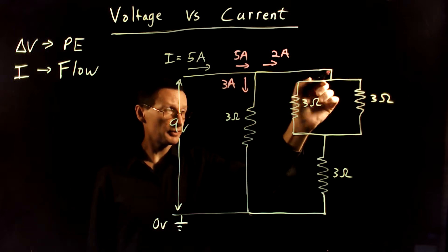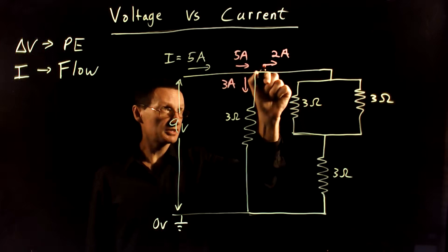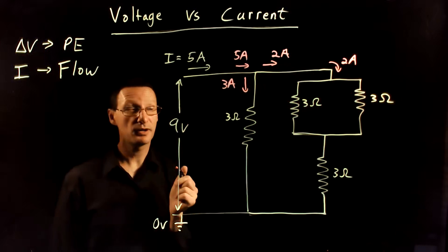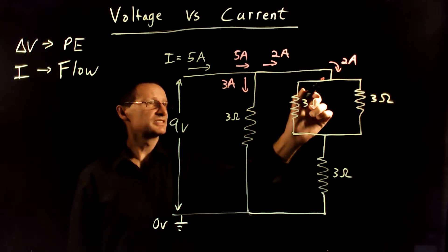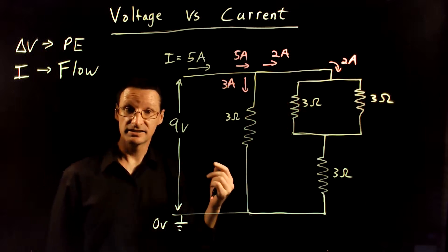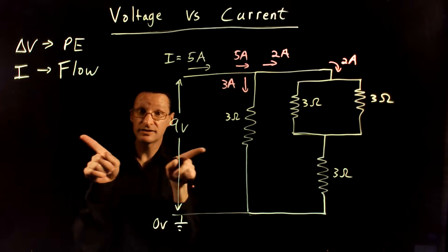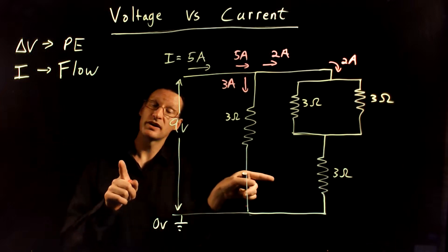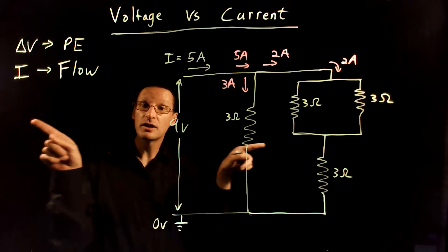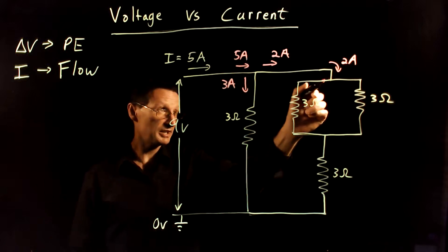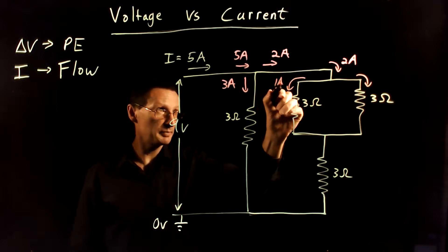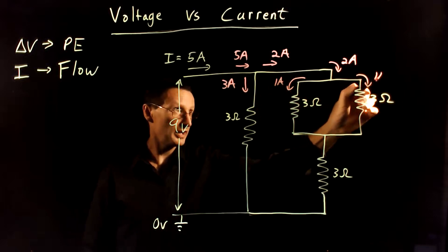Now what's the current over here through this part of the wire? Well, if two amps comes through this part of the wire, that means two amps must come through this top part of the wire. Now at this next junction, the current again splits. Like pipes with a split — some water goes one direction, some the other, but whatever comes into that junction must go out. So if two amps come in, one amp goes this way and one amp goes that way.